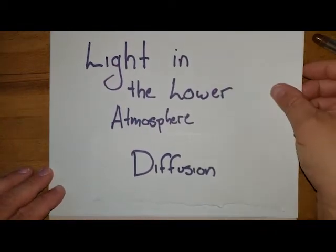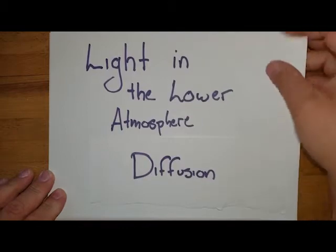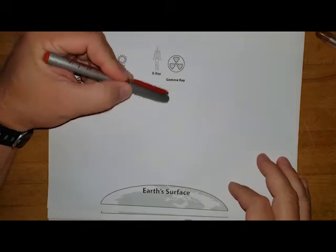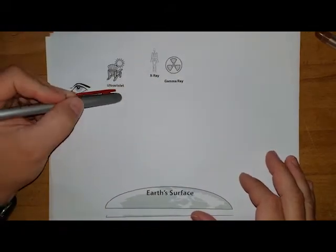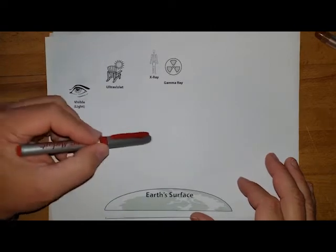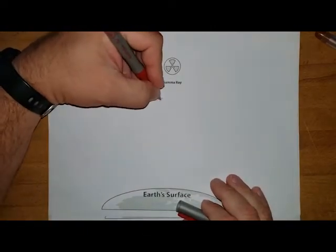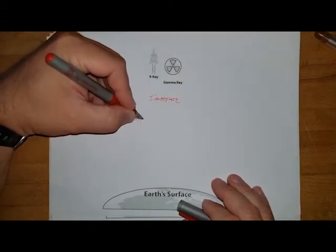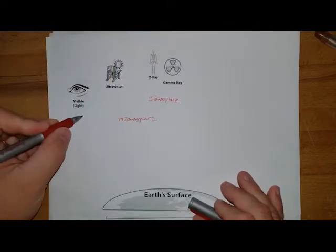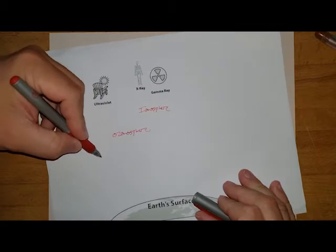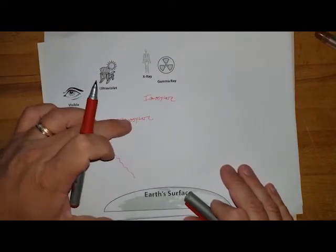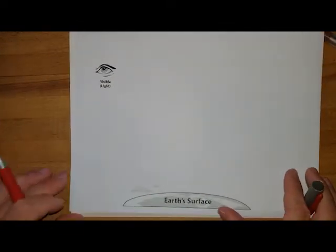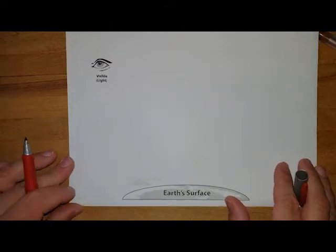Let's talk about what happens to light once it comes down into the lower part of our atmosphere. We've already discussed gamma rays and X-rays, which get captured in the ionosphere, and UV rays, which get stopped in the ozonosphere. But what happens to light energy as a wave coming all the way down through the ionosphere and ozonosphere before it reaches the very surface?